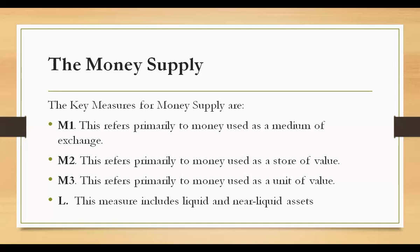The Bangko Sentral ng Pilipinas (BSP) is responsible for determining the supply of money. It uses daily open market operations to influence the creation of money by banks and to guide the availability of money in the economy. The BSP also impacts money creation through reserve requirements and a discount rate — the interest rate at which banks can borrow from the BSP as a lender of last resort. Changes in the money supply will affect interest rates and therefore the cost of borrowing, which impacts consumption and investment levels.